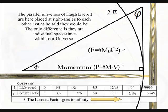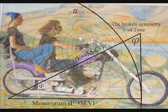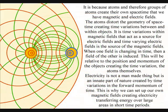In quantum atom theory, it is because the atoms can distort the geometry of spacetime, that we have electromagnetic fields. It is time variations within magnetic fields, that act as a source for electric fields. And time varying electric fields, is the source of the magnetic fields.